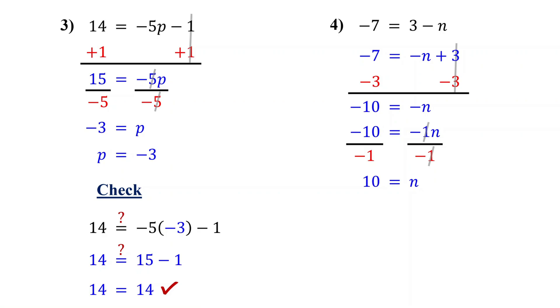On the right, the negative 1s cancel out, leaving just n. On the left, negative 10 divided by negative 1 is 10. So the solution is n equals 10. To check, plug in 10 for n in the original equation and simplify. 3 minus 10 is negative 7. It checks out, so we are correct.